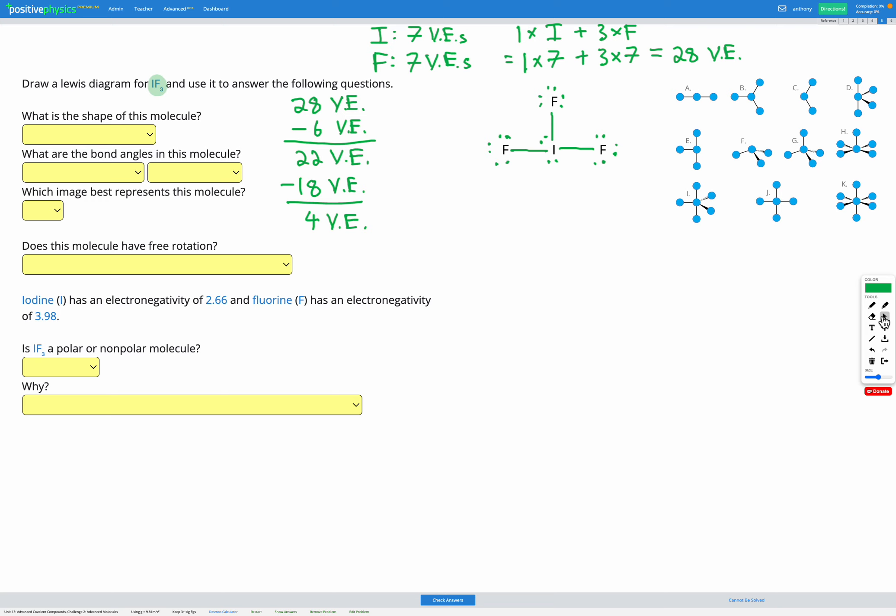If you need more practice drawing Lewis diagrams, go back to the previous unit introduction to covalent compounds. Our next question asks us to find the shape of this molecule. To do that, we're going to look at how many electron domains we have. Each of these bonds is an electron domain, so that's one, two, three. Lone pairs are also electron domains, so we've got one here and one here. That's a total of three bonds and two lone pairs, which is a total of five electron domains.